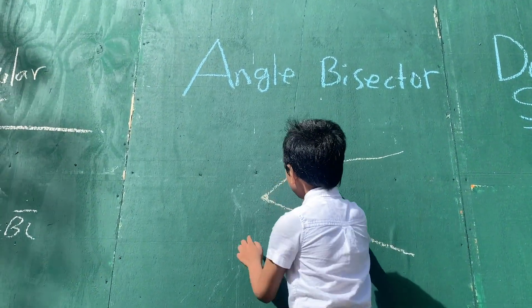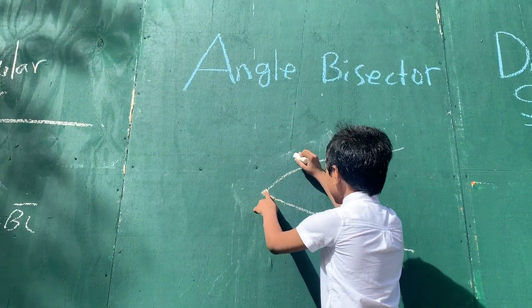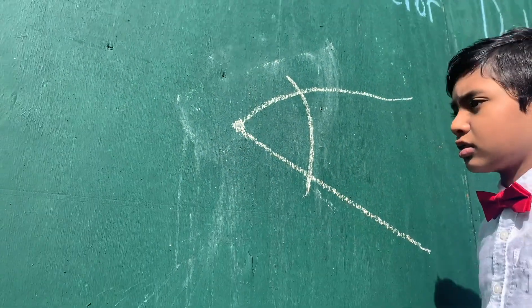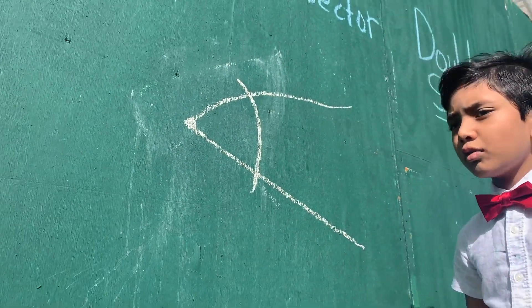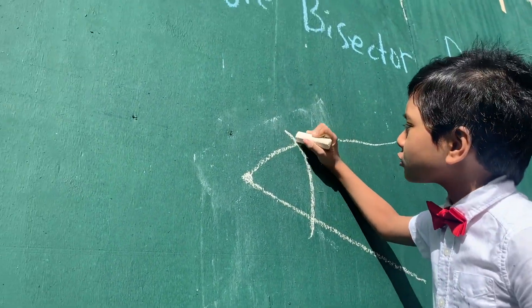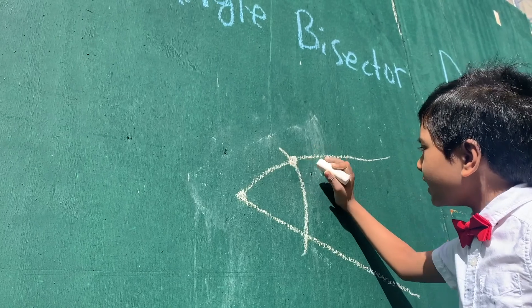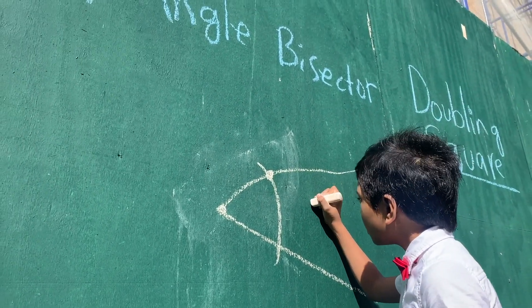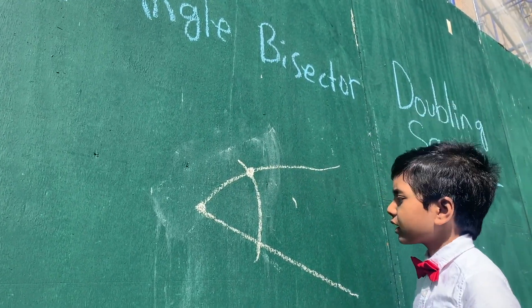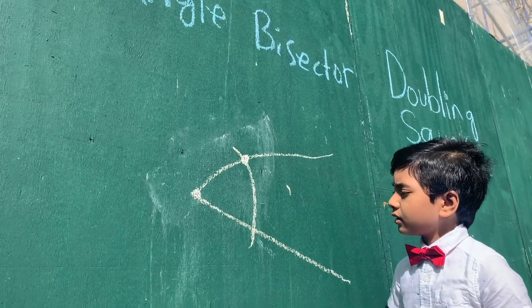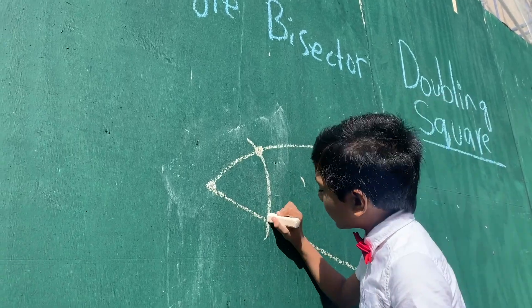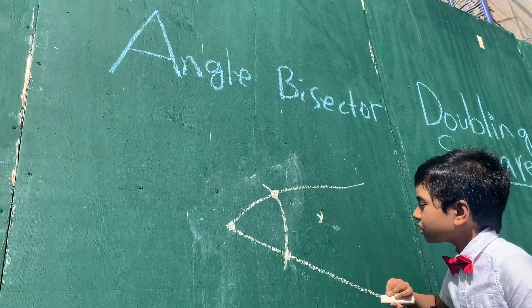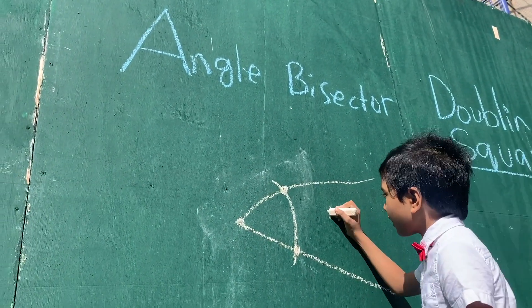Now let's use our compass to draw an arc near that angle. Now let's highlight this first intersection point and draw an arc around the middle based on that. Then we can draw our second intersection point and using our compass we can make another arc.